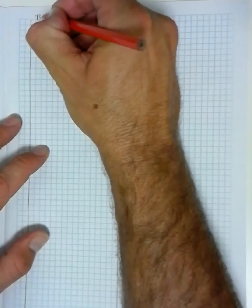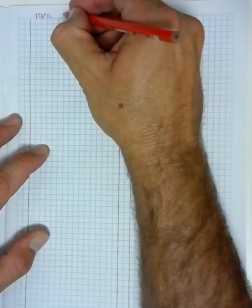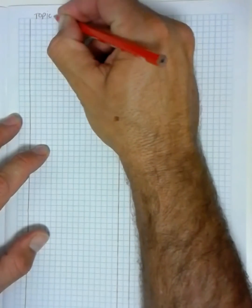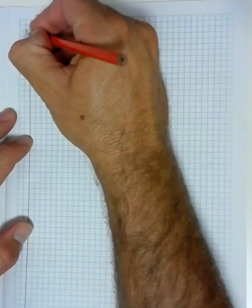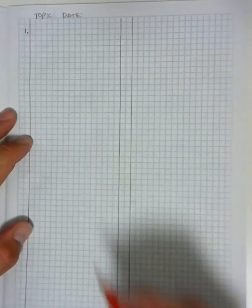What we now want to put at the top is a date and a topic. We're going to put the number on the left hand side in the margin.